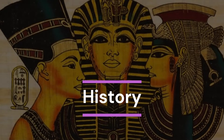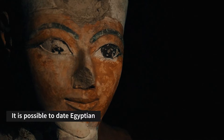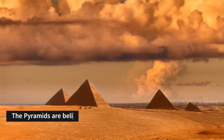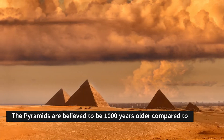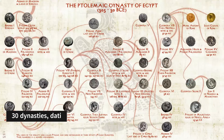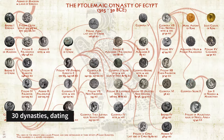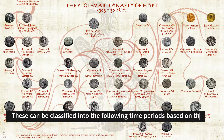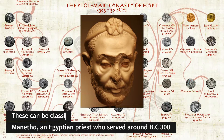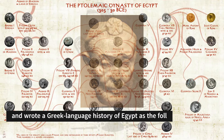Historical. It is possible to date Egyptian civilization to more than 4,000 BC. The pyramids are believed to be 1,000 years older compared to any other Western Asian structure that has been found. Thirty dynasties, dating as far back as 332 BC, comprise the arrangement of the kings or pharaohs. These can be classified into the following time periods based on Manetho, an Egyptian priest who served around 300 BC and wrote a Greek-language history of Egypt.